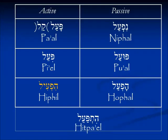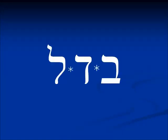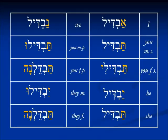Today we're going to talk about the Hifil binyan, starting with the root we have been using: bet-dalet-lamed. In the Hifil, that means 'to divide.' In the present tense, you recall that the Hifil has a mem prefix and also a yud infix, so the present tense is mavdil. In the future tense we see all the same prefixes and suffixes and the yud infix — I will separate: avdil; you: tavdil; and so on.